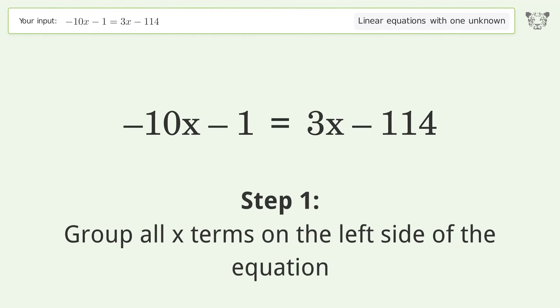Group all x terms on the left side of the equation. Subtract 3x from both sides. Group like terms.